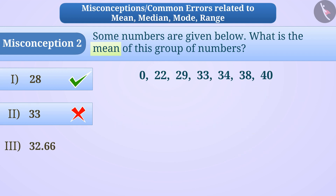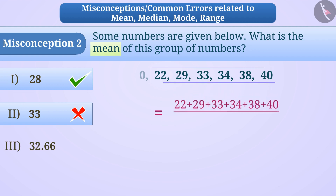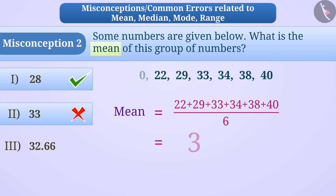While calculating mean, some children ignore the observation 0. They think they only need to find the mean of the other 6 observations and divide by 6, giving them 32.66 — which is a wrong answer. Zero must be included as an observation when calculating the mean.